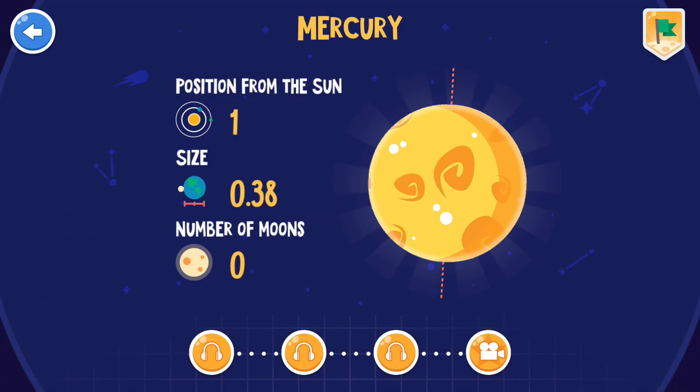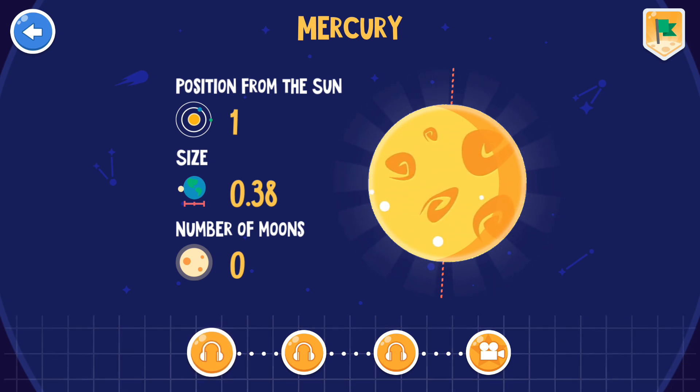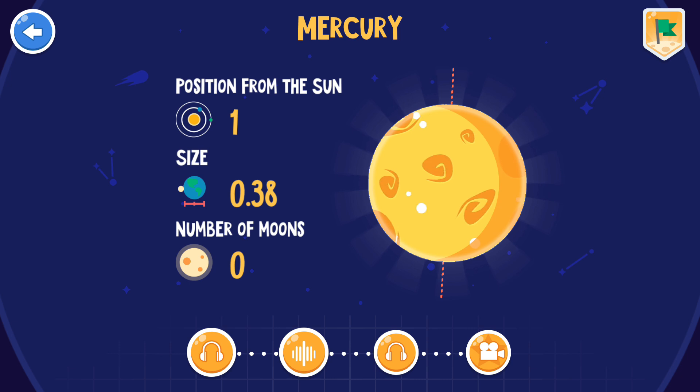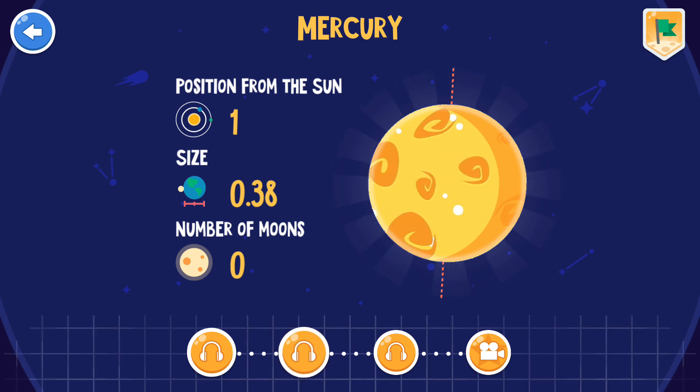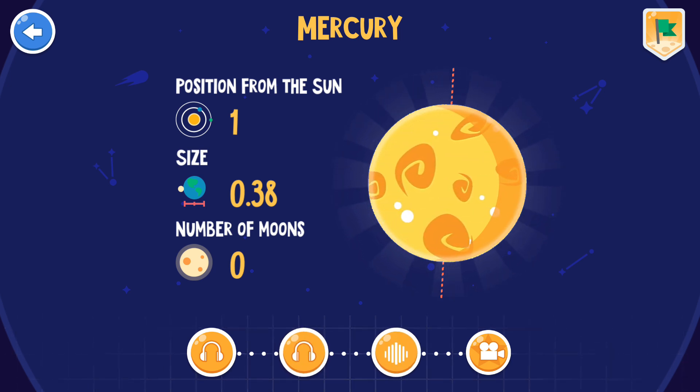Mercury is the smallest planet in the solar system. It is also the closest to the Sun. Mercury has no atmosphere. Most of the craters on Mercury were named after famous writers and artists.